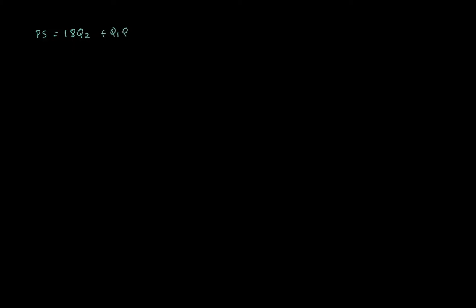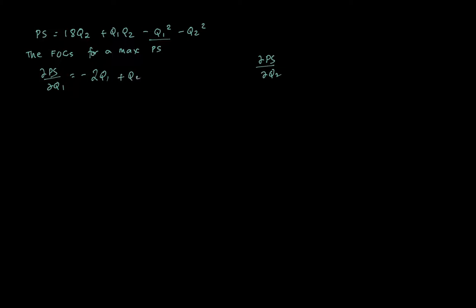To get the optimal quantities for each block, we derive producer surplus — that's PS = 18Q2 + Q1Q2 minus Q1 squared minus Q2 squared — with respect to each quantity and set equal to zero. The FOC with respect to Q1 gives: minus 2Q1 plus Q2 = 0. The FOC with respect to Q2 gives: 18 minus 2Q2 plus Q1 = 0.